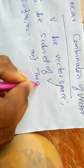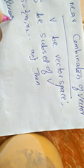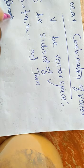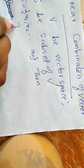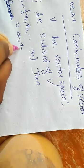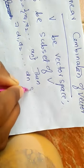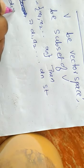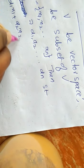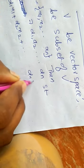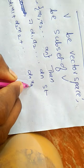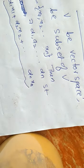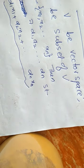Then a linear combination is defined with scalars alpha 1, alpha 2, and so on, alpha n, such that alpha 1 times x1 plus alpha 2 times x2 plus and so on plus alpha n times xn. This combination is called a linear combination.